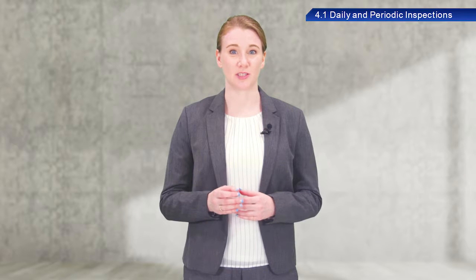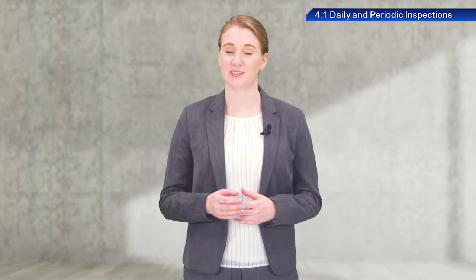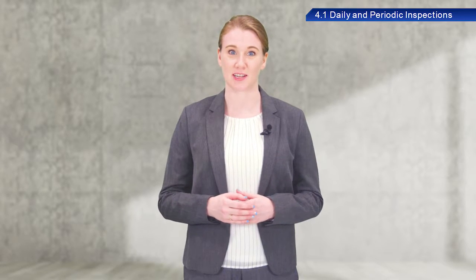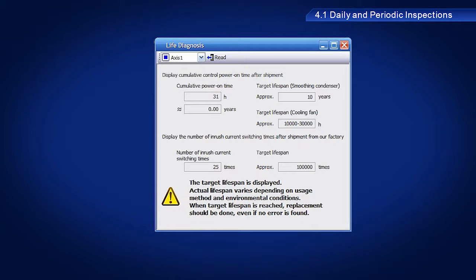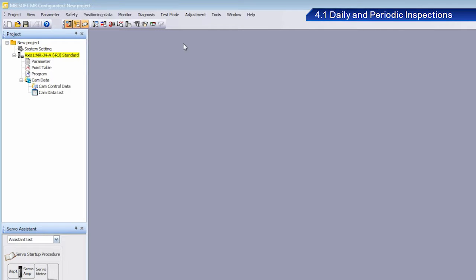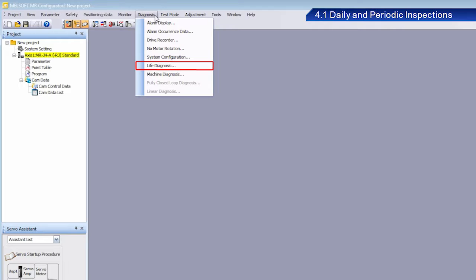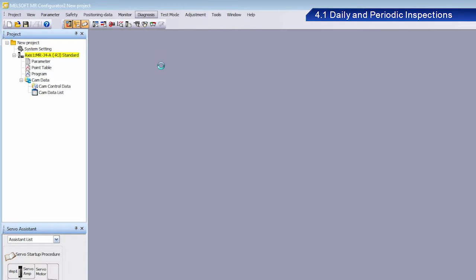MR Configurator 2 also includes a feature called Life Diagnosis function. This function lets you know when it is time to replace specific parts such as smoothing capacitors and relays. From the menu bar, select Diagnosis and then Life Diagnosis to view this status information.